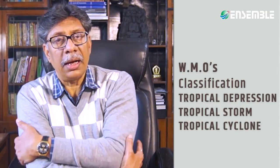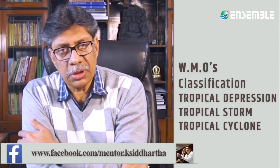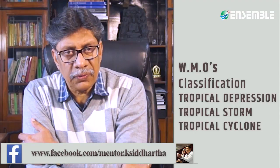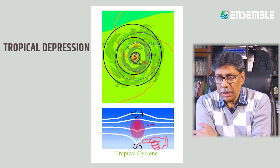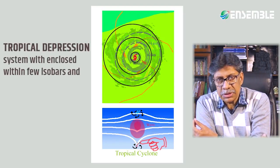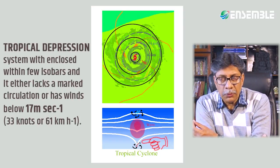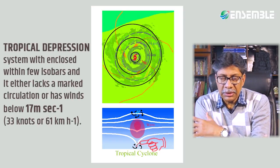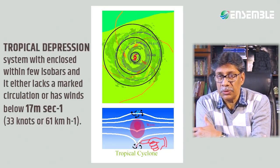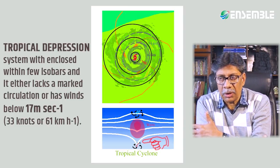The World Meteorological Organization (WMO) has classified tropical disturbances into three types. Not all disturbances are called tropical cyclones, and not all tropical cyclones are actually tropical depressions or storms. The first type is a tropical depression — a low pressure system enclosed within few isobars, meaning the pressure gradient is low, which consequently results in lower wind velocity.